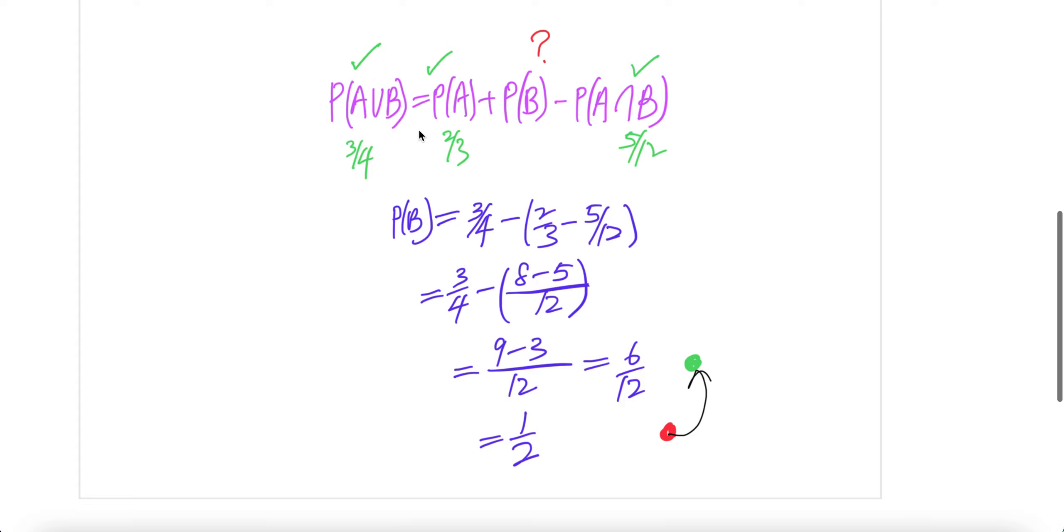Let us plug in the known values: three-quarters, two-thirds, and five over 12. Now, we need to find that. So, the P(B) is three-quarters minus these two things.